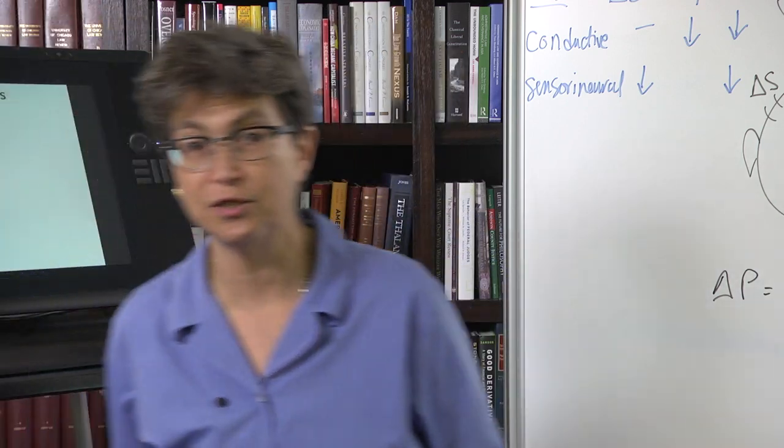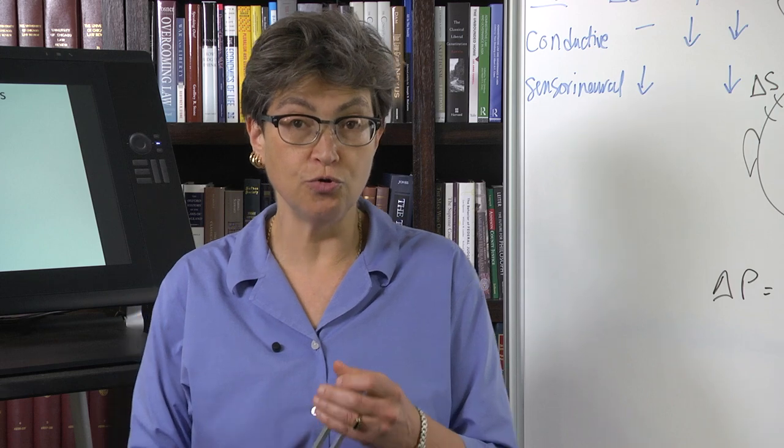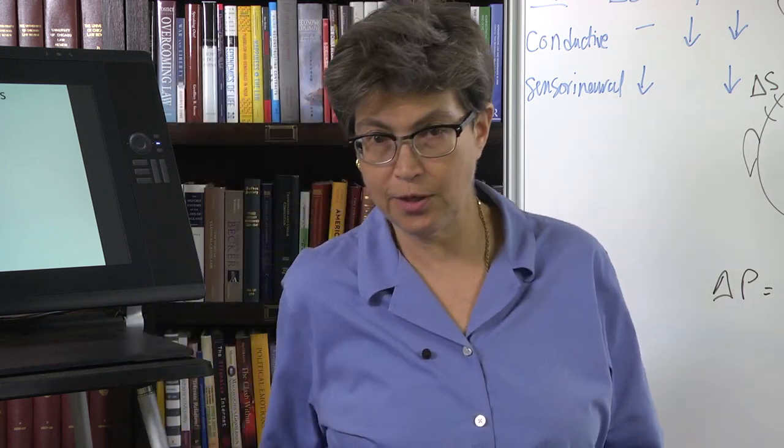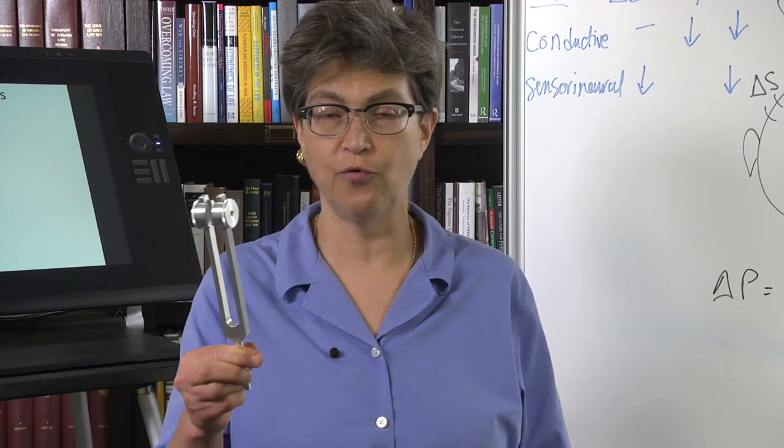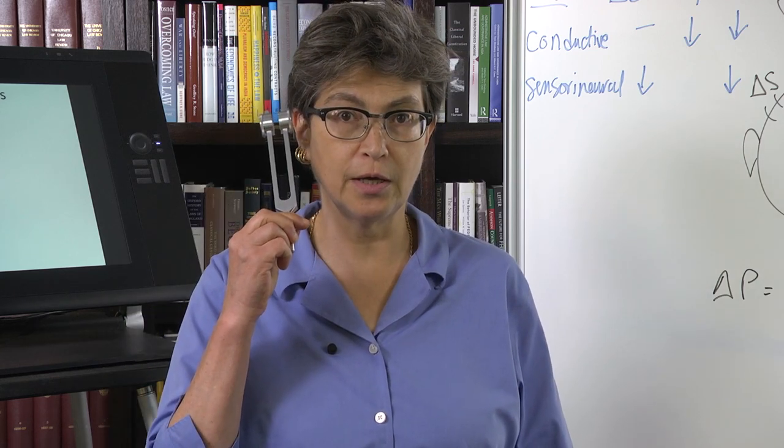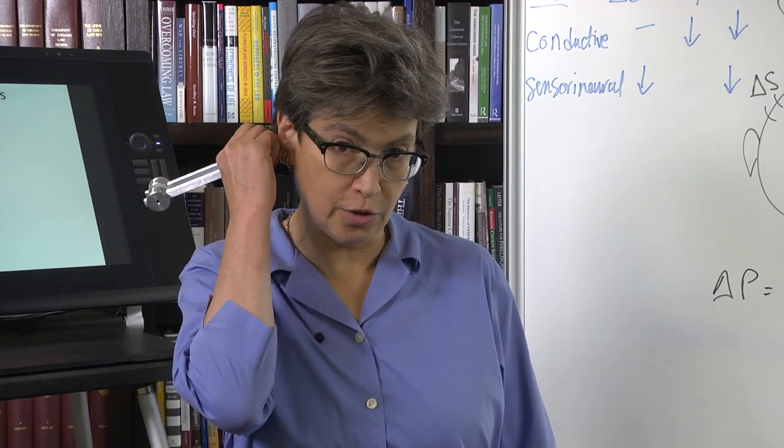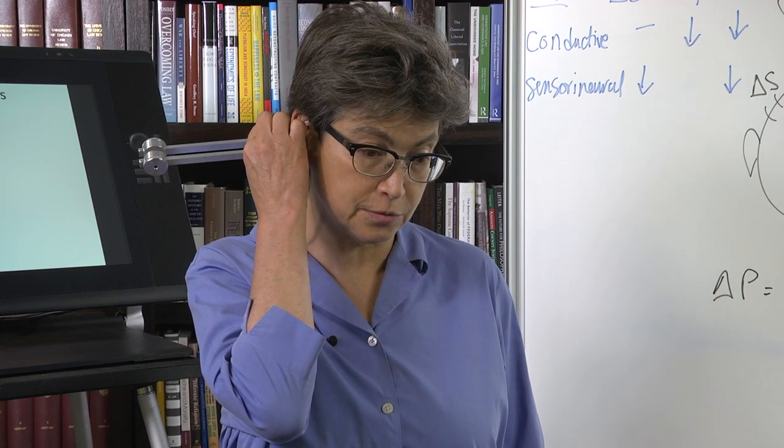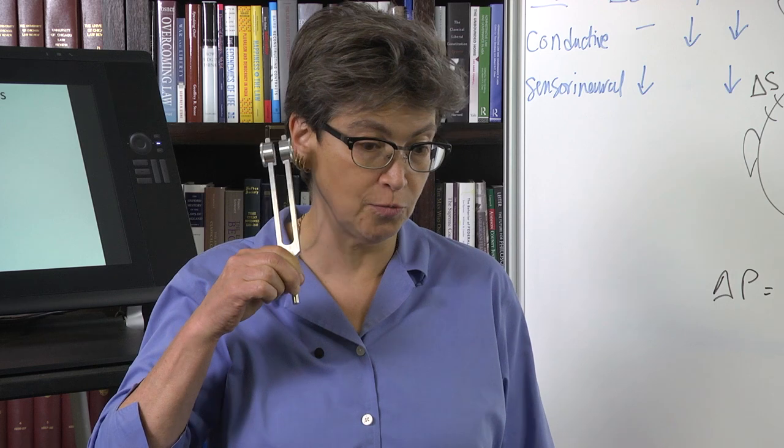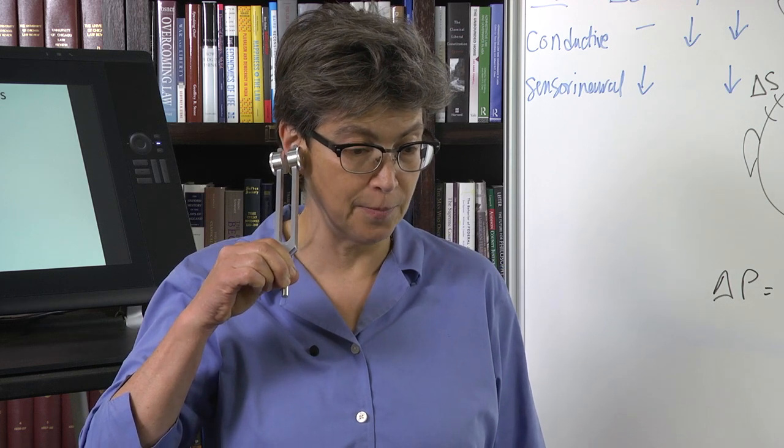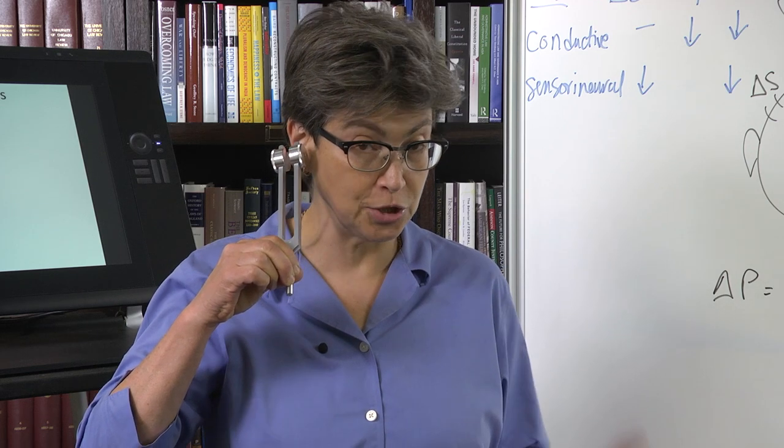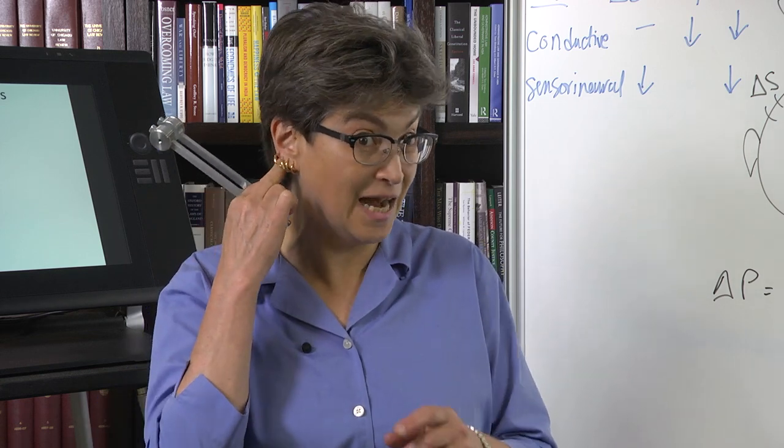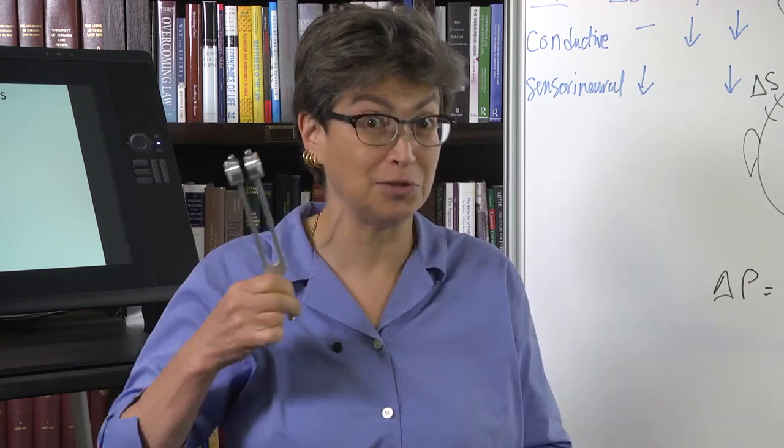So how do you use this tube to test for hearing? You use it like this. You bang your tuning fork. I can hear that. Now you're going to put it on the mastoid and I'm going to hear it through bone conduction until I stop hearing it through bone conduction. When I put it in front of my ear I should still hear it.